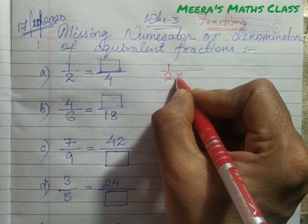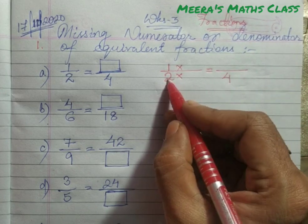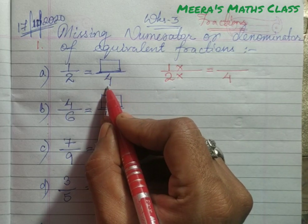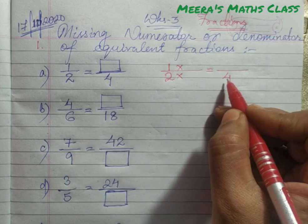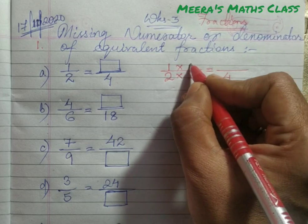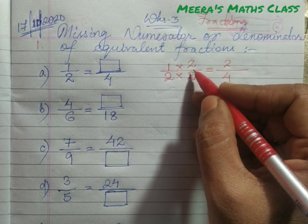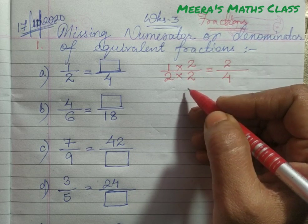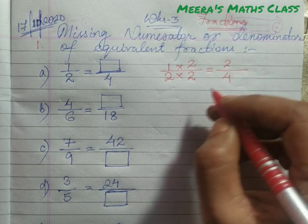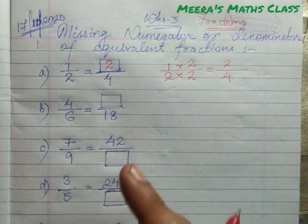I hope you all remember in the last class I told you how to find out the equivalent fraction. 2 into how much is 4? We will first take which one is given. As the denominator is given, we are going to write the denominator first. So, 2 twos are 4, and 1 two is 2. We are multiplying the same number in the numerator as well as in the denominator. So now we got 2 as the answer for the numerator — 2 by 4. So 1 by 2 is equal to 2 by 4. This is the first example.